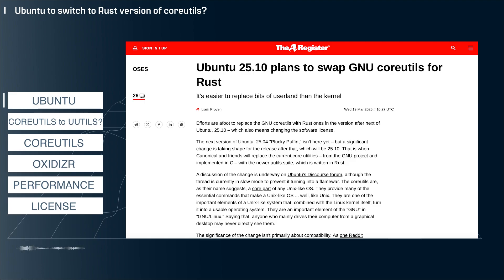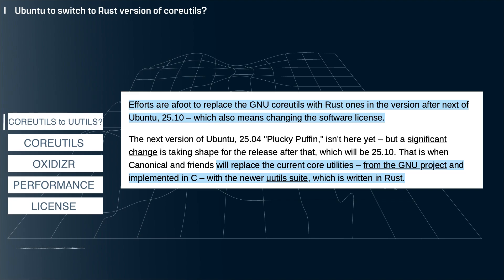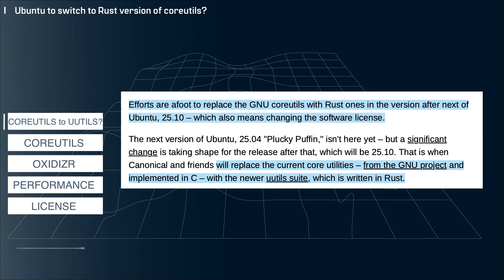Here I have a story from The Register covering a debate within the Ubuntu community about switching from GNU coreutils, which is written in C and has been used for many years, to uutils, which is a port written in Rust that is not yet complete. From my understanding, it doesn't seem like this is a done deal yet, but there is a faction pushing for the change.